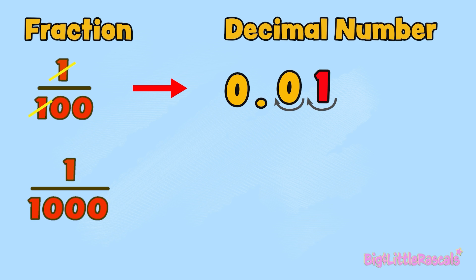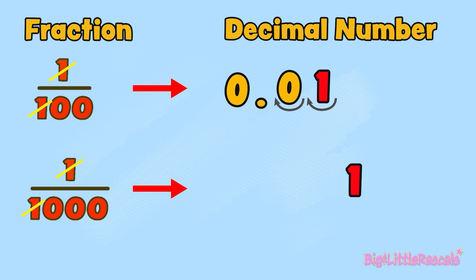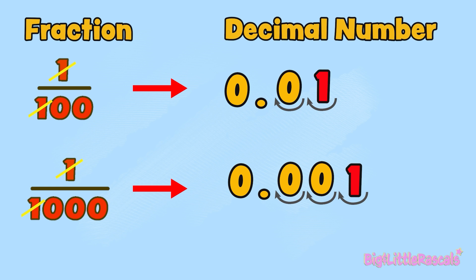Now let's see one-thousandth. Let's divide 1 at the top by 1 at the bottom — it gives us 1. Because there are still three zeros left at the bottom, we need to jump three times to the left: 1, 2, and 3. We add 0 for each empty jump, then add the decimal point after that, and add 0 at the front, as this is less than 1 whole. Easy! Good job!